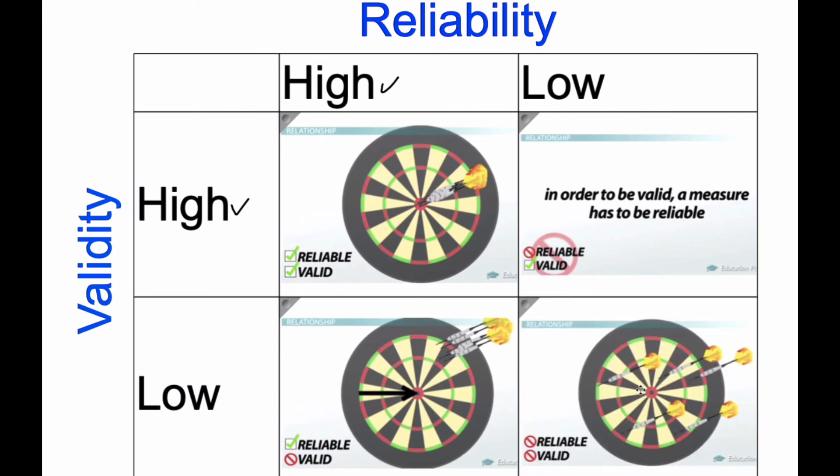And then finally, a low-low, well, that means it's very unreliable and very invalid. This is me as a dart player. I am not reliable, and my skills are not valid for assessing my abilities. So I am all over the place, and this we do not want. Ideally, when we are doing research, we are trying to get this scenario here. It is challenging to do.